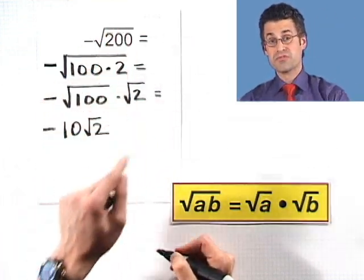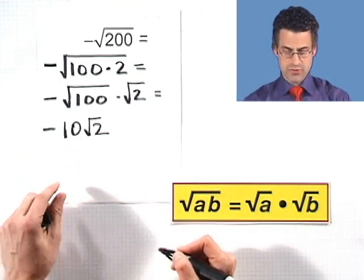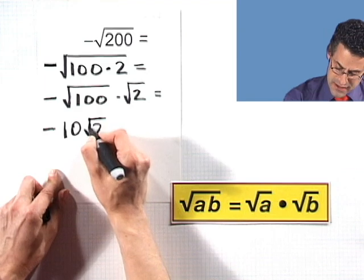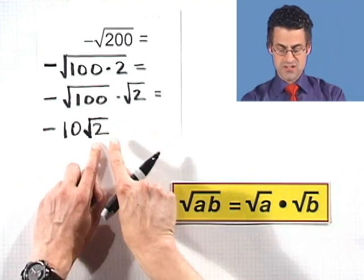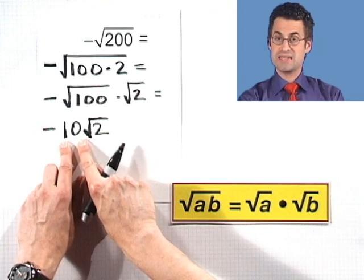So in fact, this equals negative 10 square root of 2. So negative square root of 200 actually is the exact same thing as negative 10 square root of 2. And somehow in my mind, I think this is a little bit more friendly.